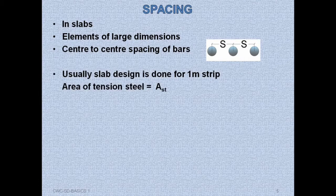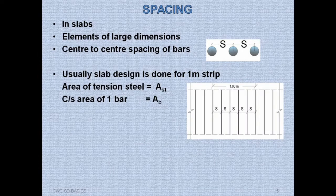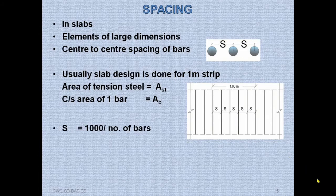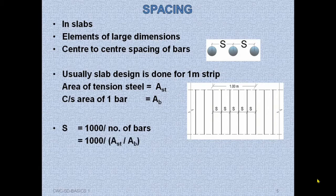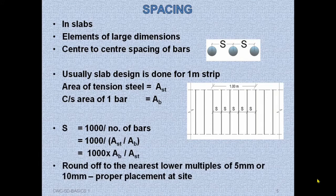Let the area of tension steel be Ast and the cross-sectional area of one bar be Ab. For a one-meter strip, the center-to-center spacing s = 1000 mm / (number of bars in one-meter strip). We know n = Ast / Ab, so s = (1000 × Ab) / Ast. Round off the calculated value to the nearest lower multiple of 5 mm or 10 mm to ensure accurate placement at site — always round down, not up.